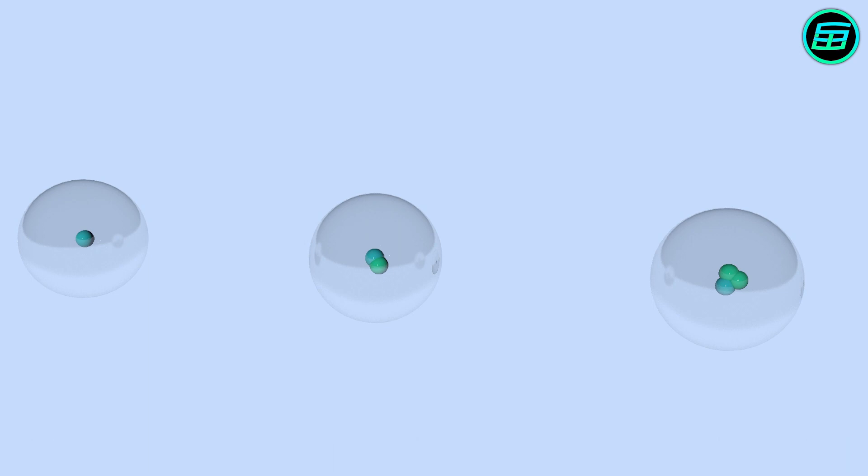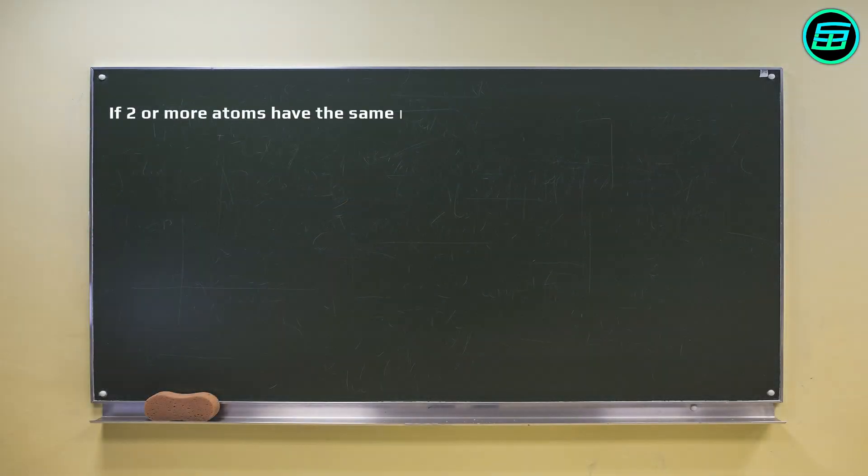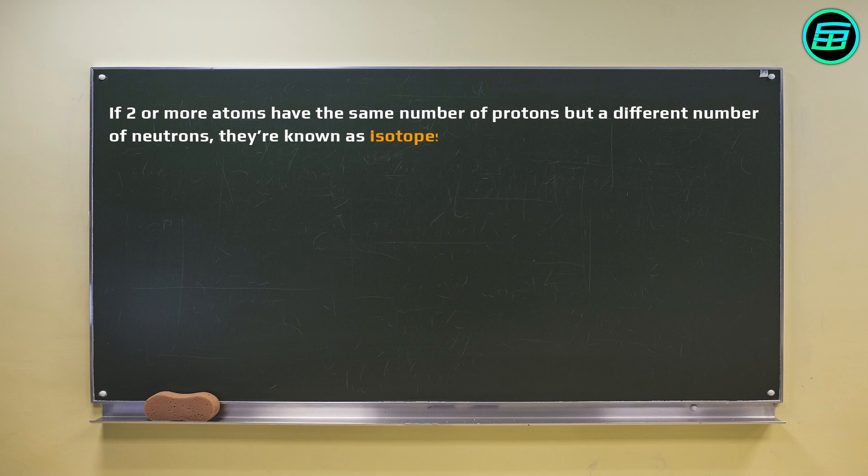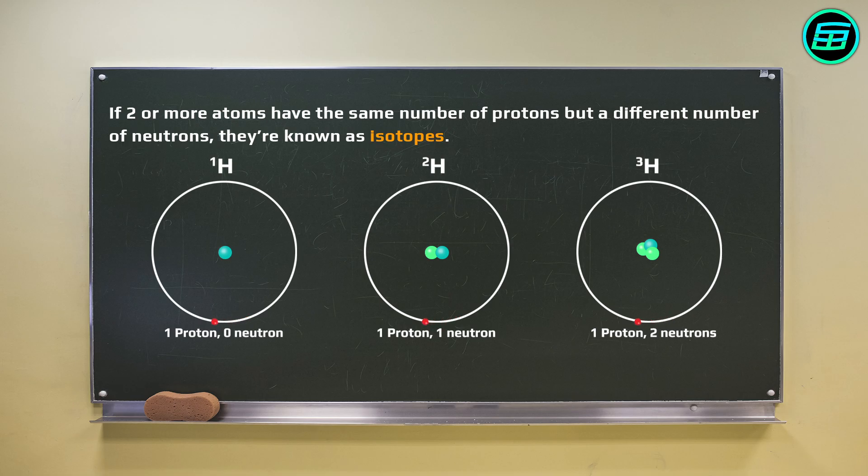In chemistry, if two or more atoms have the same number of protons but a different number of neutrons, they're known as isotopes. Isotopes display the same chemical behaviour but have different physical properties such as boiling point, melting point and density.